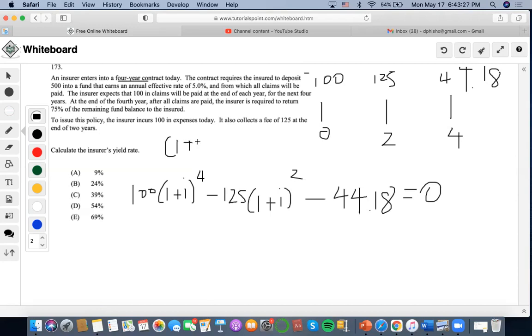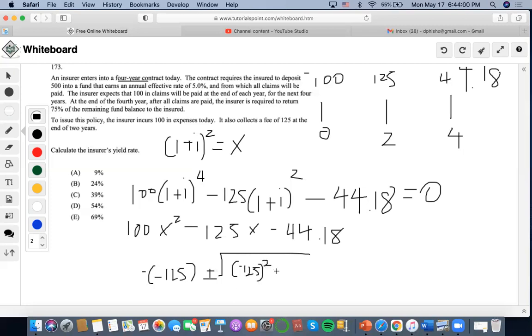So I'm going to do 1 plus i squared equals x. Now I'm going to do 100x squared minus 125x minus 44.18. Then I'm going to set negative b plus or minus square root of b squared minus 4ac.